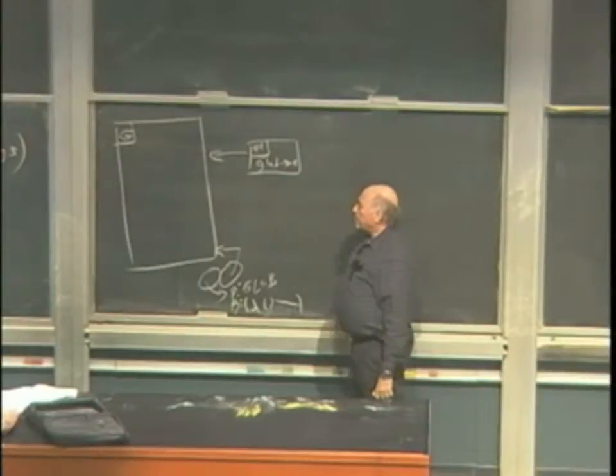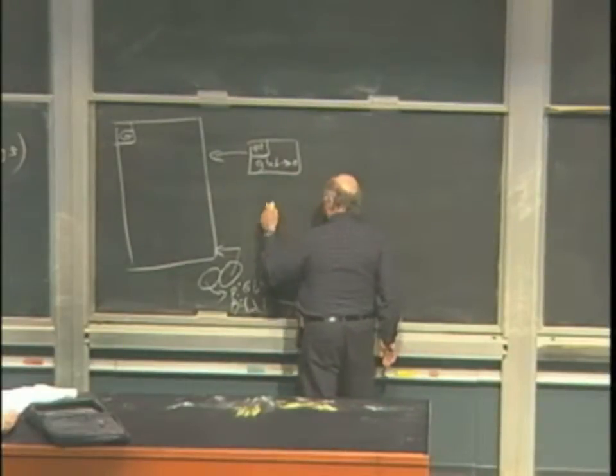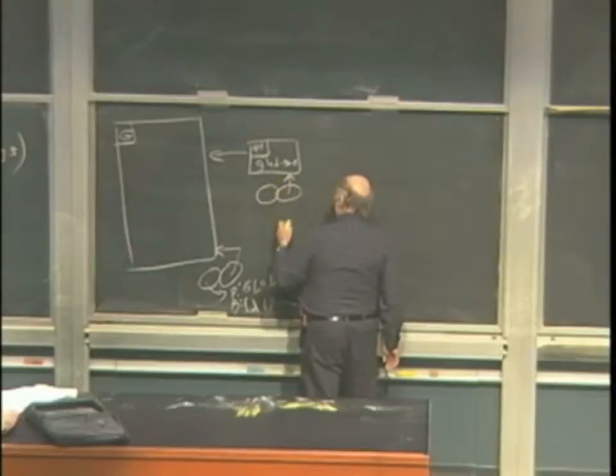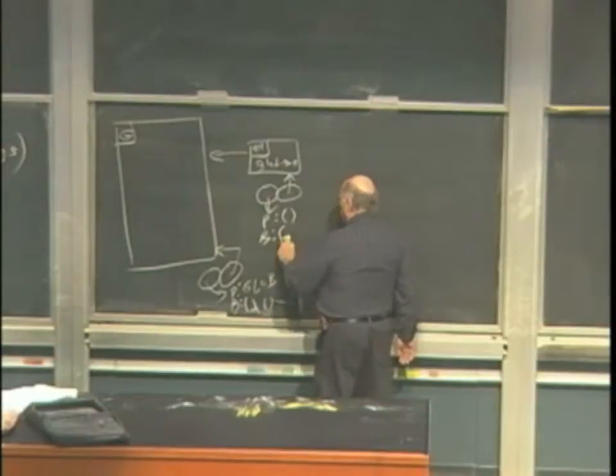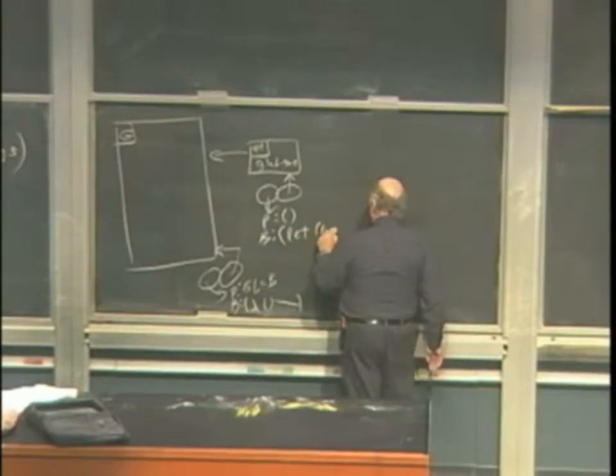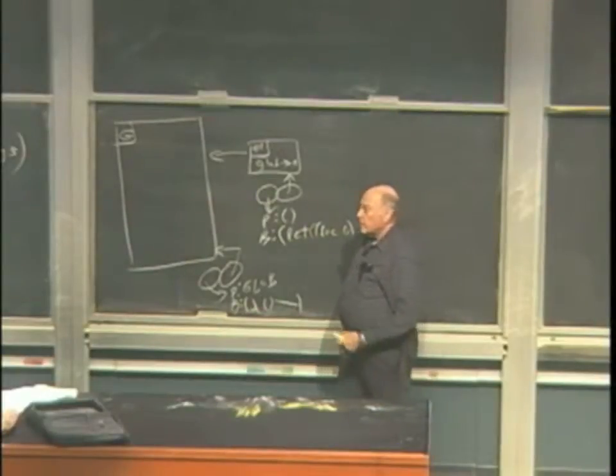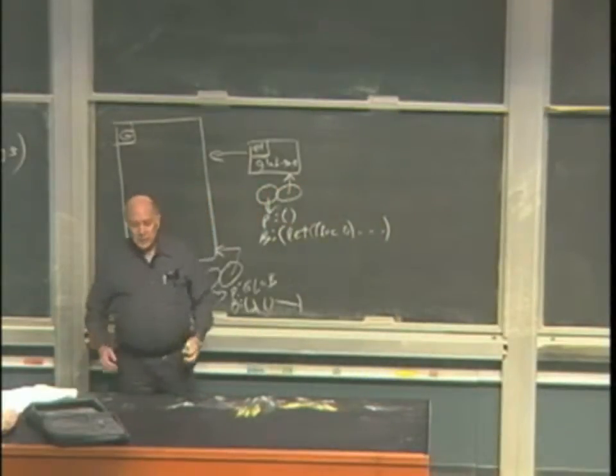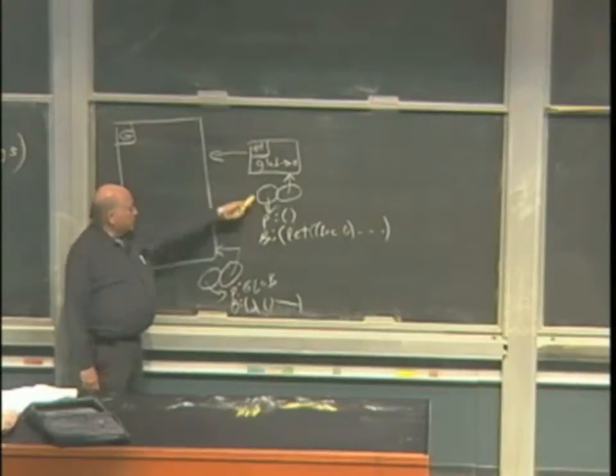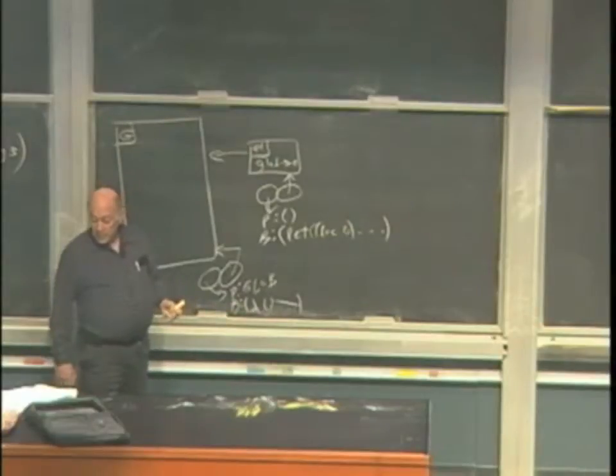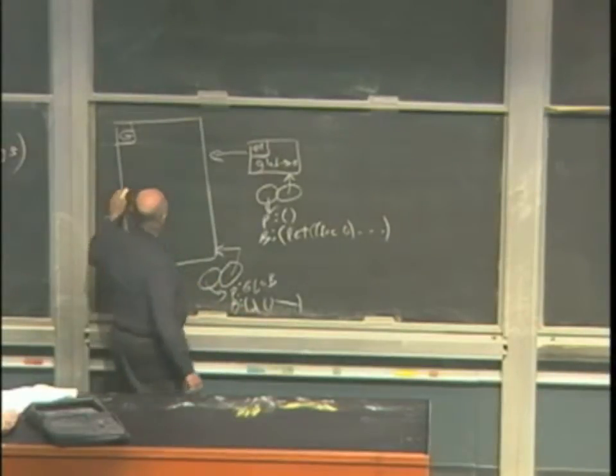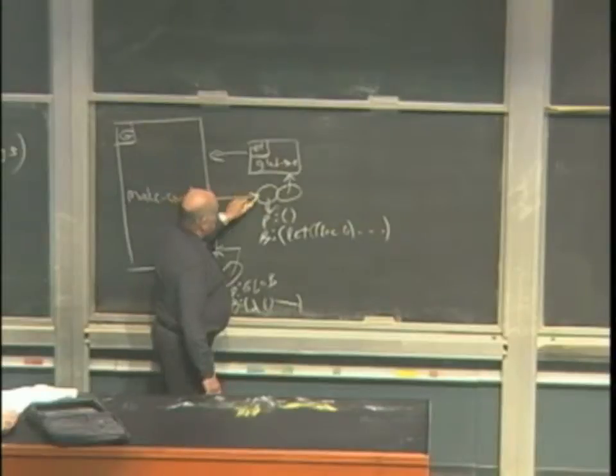And now with E1 as the current environment, I'm going to evaluate the body. The body of that is the let woke 0, et cetera. And then lambda, unlike let, just creates the procedure. It doesn't invoke it. So this procedure is what is returned by that outermost let. And so we're going to define make count to be that procedure.